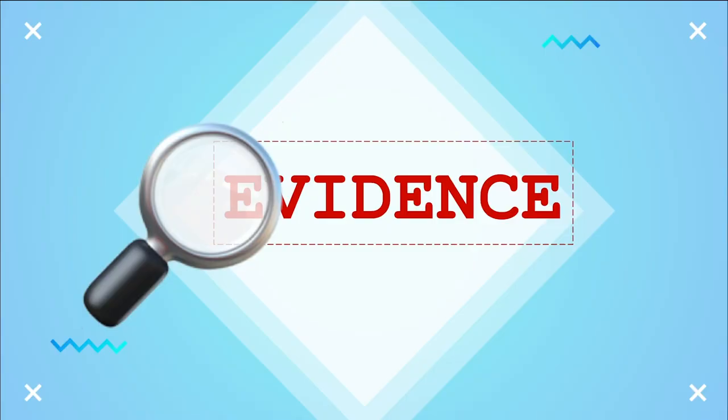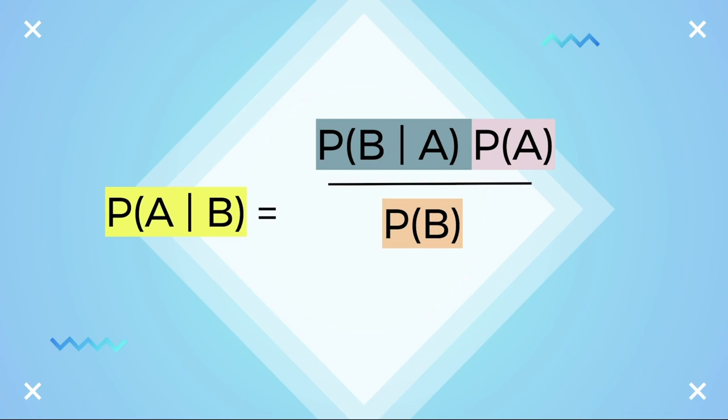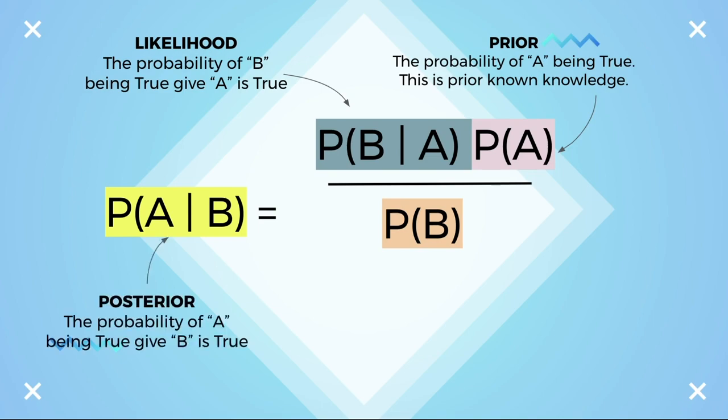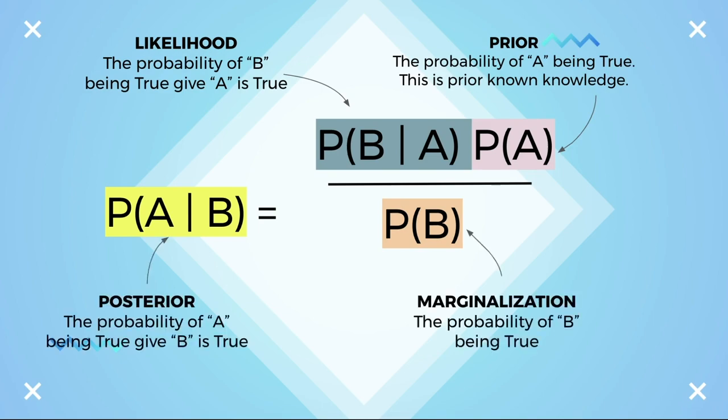In statistics, Bayesian probability is used to determine the likelihood of outcomes based on available evidence rather than just previous frequency. It's especially useful for events that have no previous occurrences, or events where calculating the exact frequency would require an incredible amount of time and resources. But in this case, we have some prior bit of knowledge that can help us out.